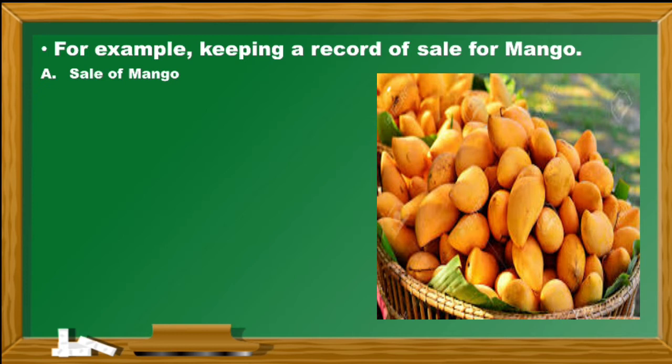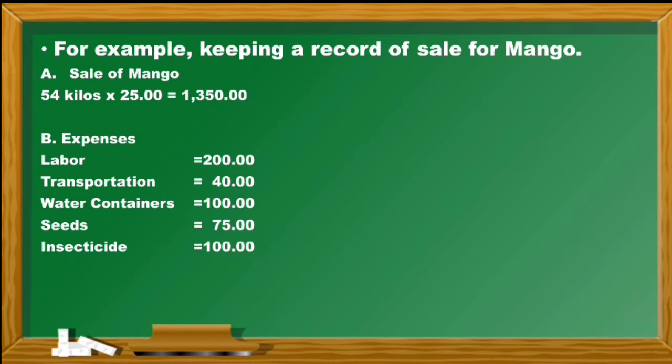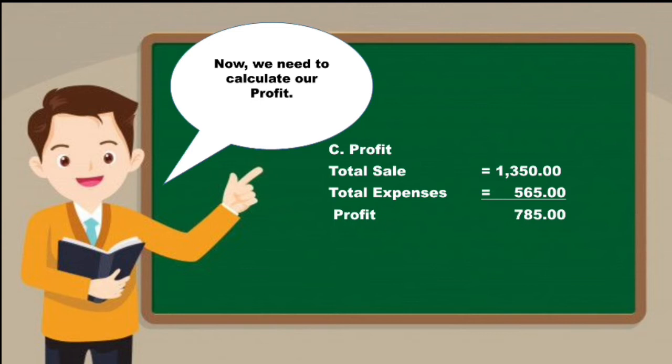A sale of mango: you have 54 kilos of mangoes multiplied by 25, that will be the cost, and it will be equals to 1,350. And then you have to note your expenses: labor 200, transportation 40, water containers 100, seeds 75, insecticide 100, fertilizer 50, the total of 565. Now we need to calculate our profit. We have to note the total sale and it will be minus the total expenses, and the answer will be your profit.